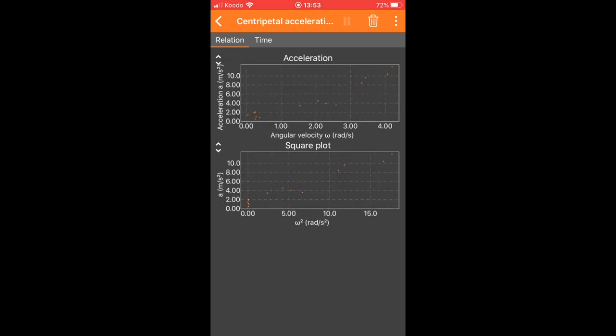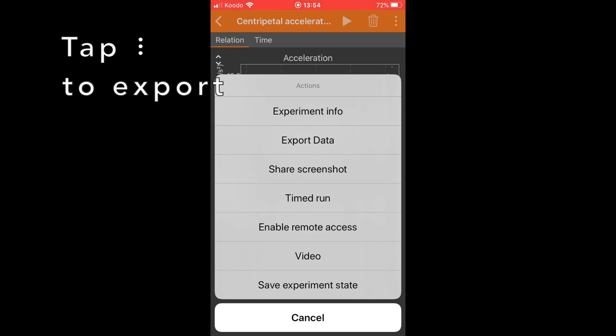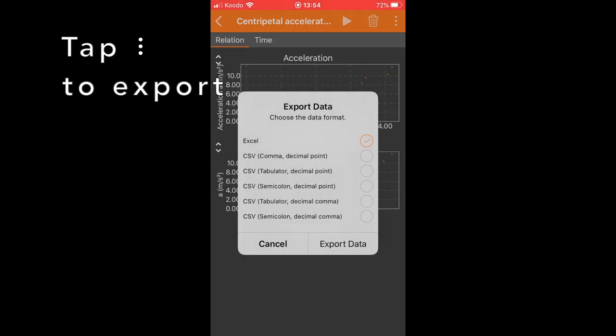When you are finished, pause data collection and go ahead and share the data. You will want to select the export data button, and then you will be able to export a CSV for comma separated values file. This CSV file can go ahead and be exported using the export data and the phone's sharing functions to get the data into a spreadsheet program on either Google Sheets or Excel.